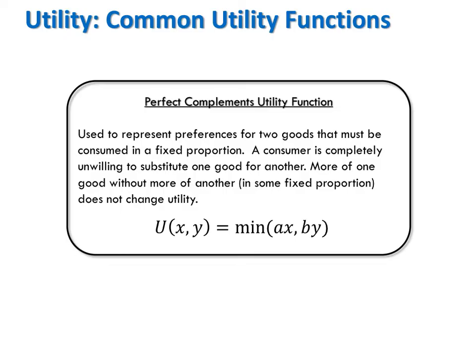Another common class of utility functions that you will see a lot in this class is perfect complement utility functions. These are used to represent preferences for two goods that must be consumed together in a fixed proportion. A consumer is completely unwilling to substitute one good for another because more of one good without more of another in some fixed proportion does not change utility.